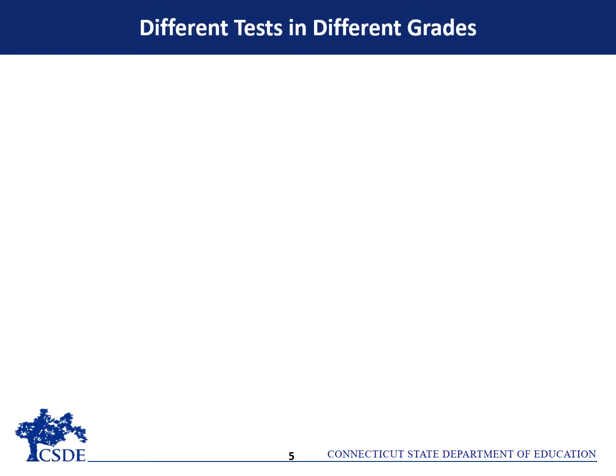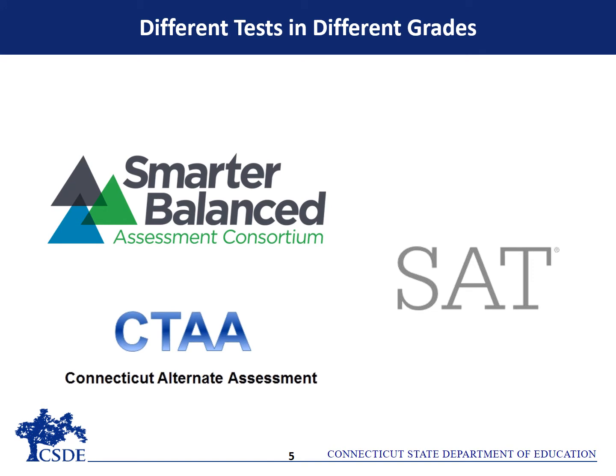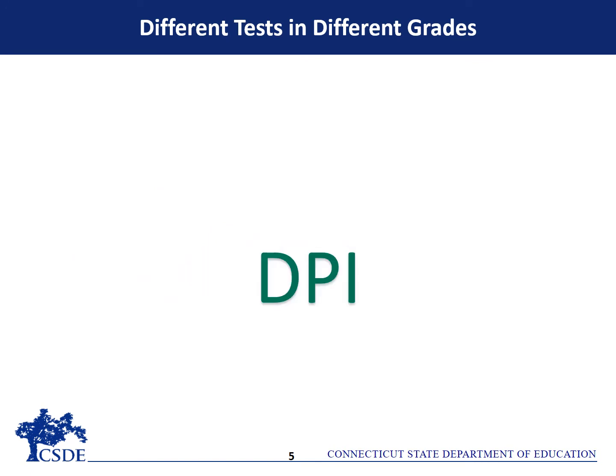Students take different tests in different grades. The DPI-SPI combines all test scores in a subject into a single performance index score. For example, in a K-12 district, scores from the Smarter Balanced Assessments for students in grades 3-8, the Connecticut SAT School Day for students in grade 11, and the Connecticut Alternate Assessment for students with significant cognitive disabilities in grades 3-8 and 11 are all included to calculate the ELA or math DPI.